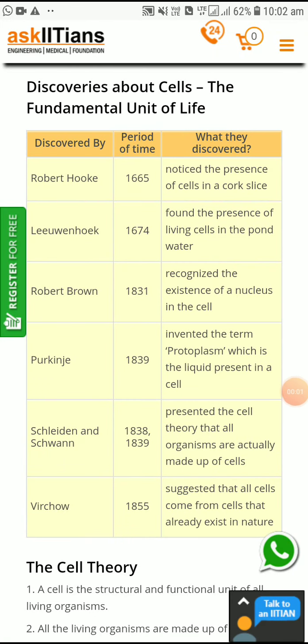Hello children. Before we discuss the cell and its properties, we will first discuss who discovered the cell. In the year 1665, Robert Hooke discovered the cell under a self-made microscope. He observed the cell as a small honeycomb structure. In Latin, the word 'cell' means small room, so he called it a cell.